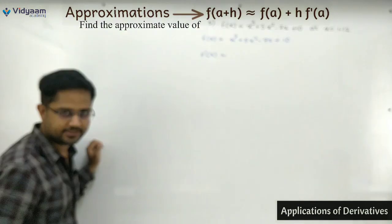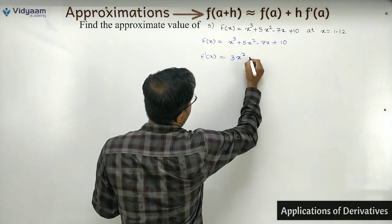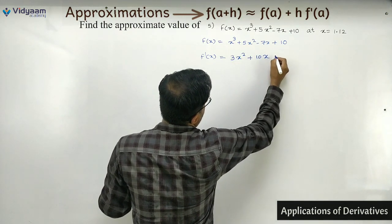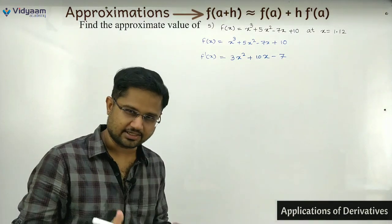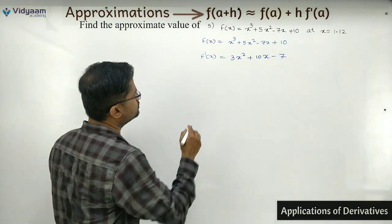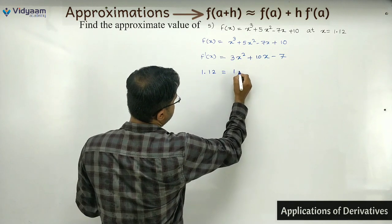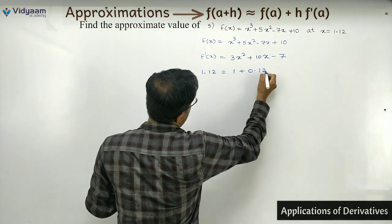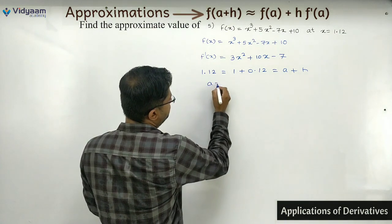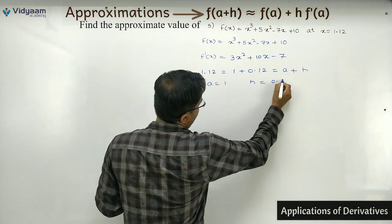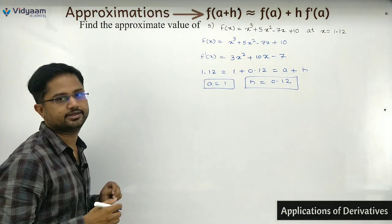Next find f'(x): derivative of x³ is 3x², derivative of 5x² is 10x, and derivative of −7x is −7. So f'(x) = 3x² + 10x − 7. Now split 1.12 as 1 + 0.12, giving a = 1 and h = 0.12.